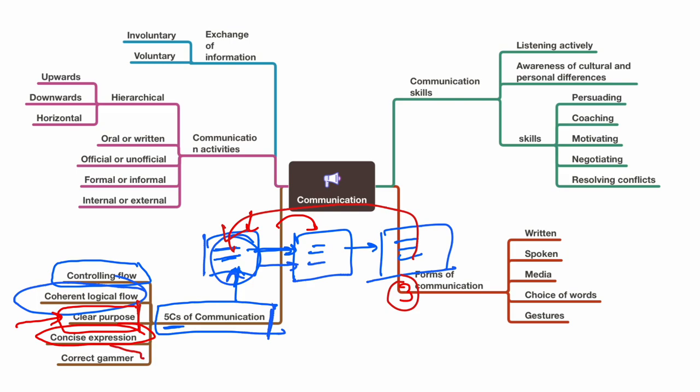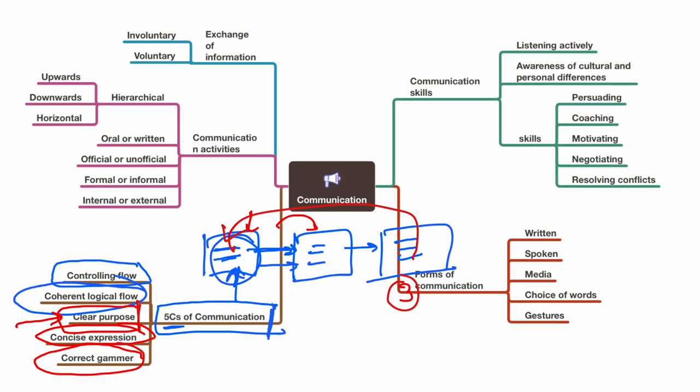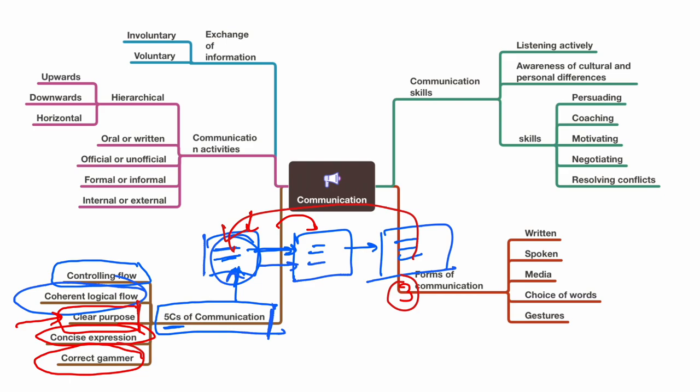And correct grammar. Nowadays, especially the current generation, Gen Z, they are taught a lot of English or Hindi. So if there's even a small grammar problem, they point it out. They don't listen to the message, but they point out the grammar. So let's recap: controlling flow first, coherent logical flow like a story, purpose, clear purpose, concise expression, and correct grammar. These are the five C's of communication.